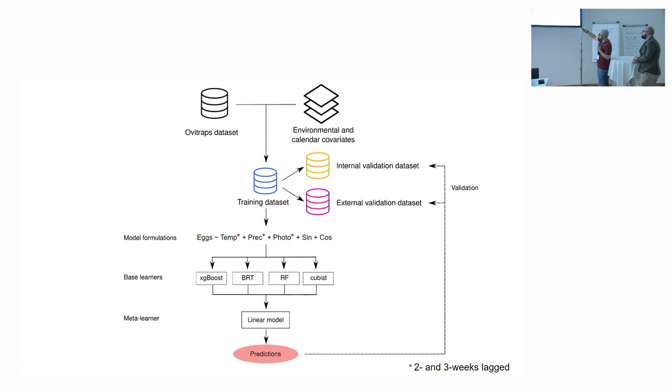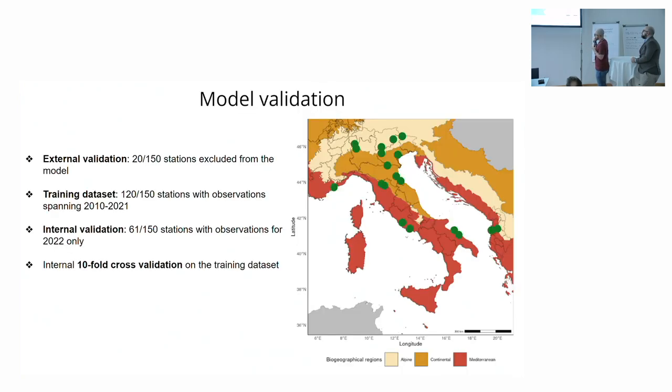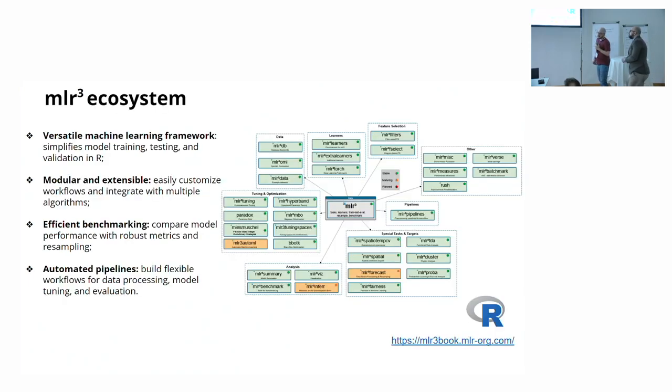We have a training dataset where we split on the internal validation dataset and an external validation dataset. I come back to this pretty soon. We formulate our model. We use four different base learners: XGBoost, BRT Boosted Regression Trees, Random Forest, and Cubist. As a meta learner, we use a linear model. We predict and we assess our results against the observations. As I said, we had an internal validation. We trained the model on 120 stations with observations pending from 2010 to 2021. For the internal validation, on those 120 stations, 60 ones were used for internal validations on 2022 only. Then we used also an external validation. We removed 20 stations, the green dots here, that they had at least three years of observation and were not used to inform the model. In addition, we also ran an internal cross validation. Before we go to the result, I let it flow to Carmelo, please.